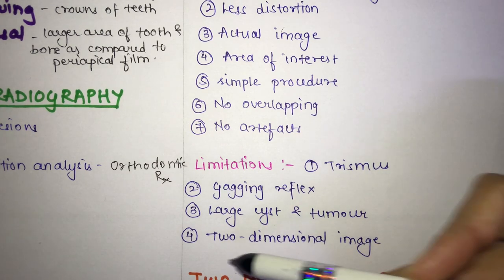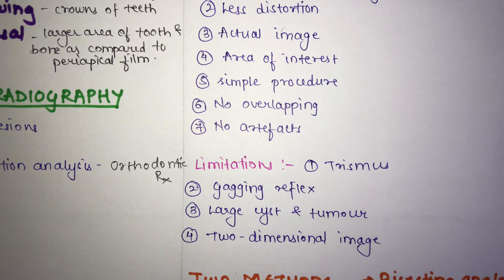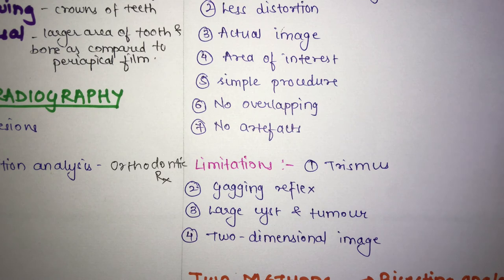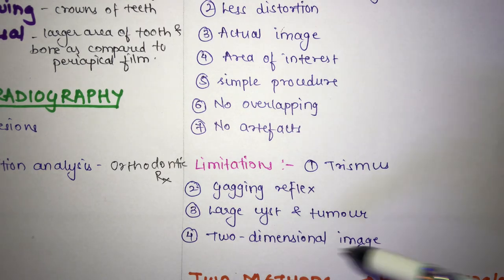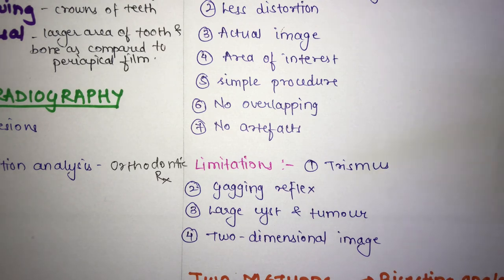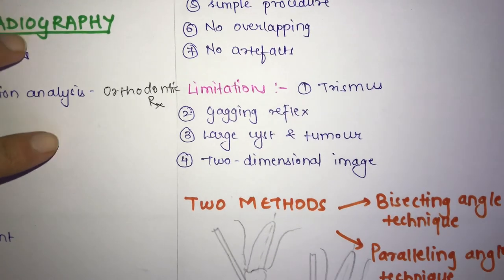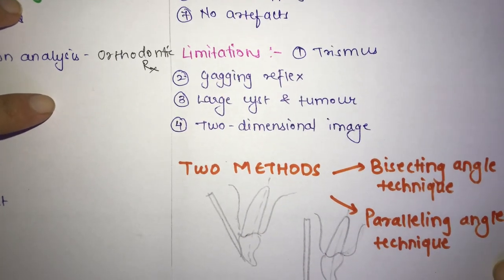Third, large cysts and tumors — these cannot be completely visualized in a periapical film; panoramic or other radiographic techniques are needed in such cases. Fourth, two-dimensional image — this is a major disadvantage, as we get a two-dimensional image of a three-dimensional object, which is why projection geometry principles and object localization techniques must be followed.